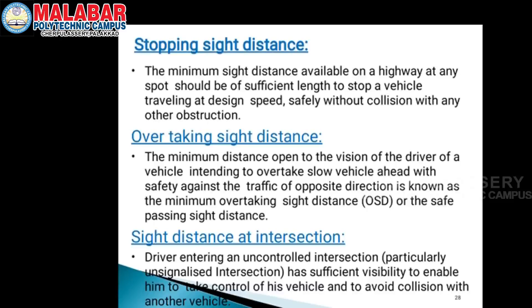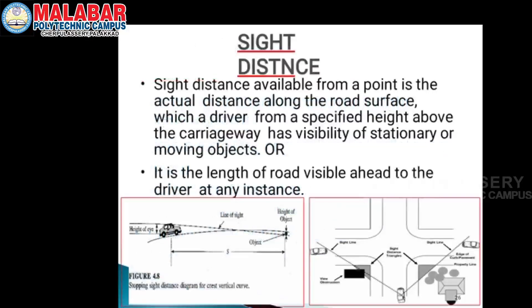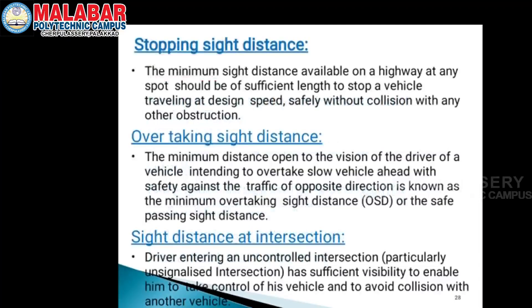This is the intersection sight distance. It suggests that the driver can use the intersection sight distance. This will vary depending on the pedestrian and driver's distance.